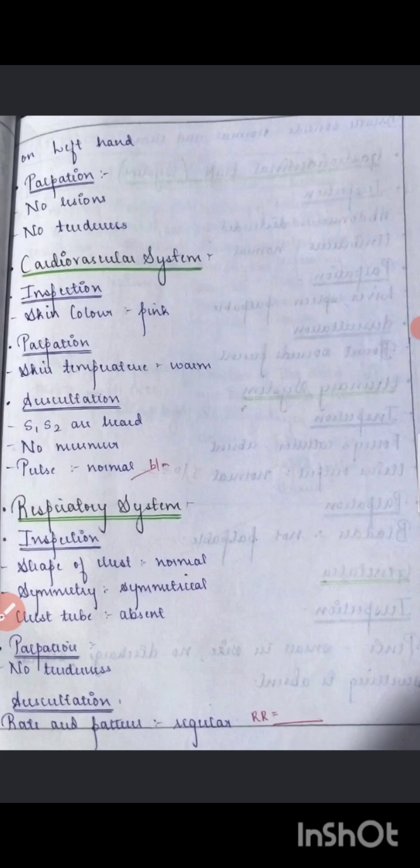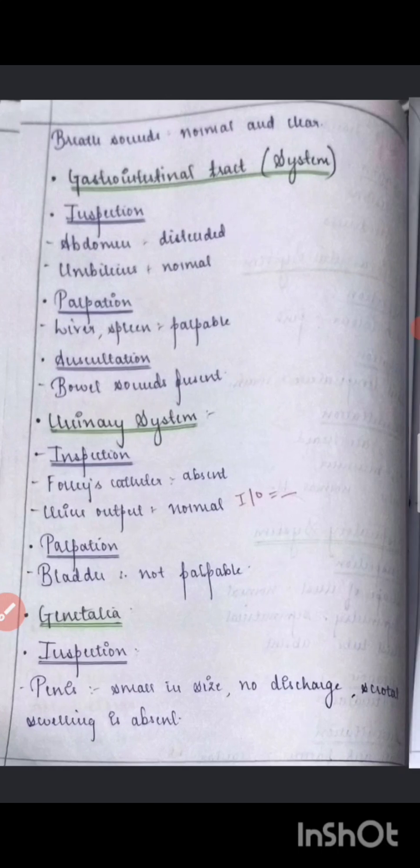For the cardiovascular system, mention the pulse rate. For the respiratory system, mention the respiratory rate. For the gastrointestinal system, document separately: inspection, palpation, percussion, and auscultation — all in the same format as shown.